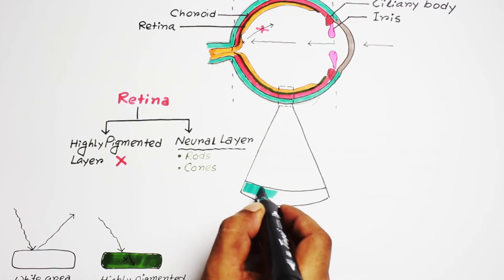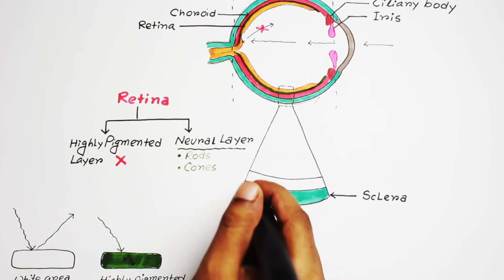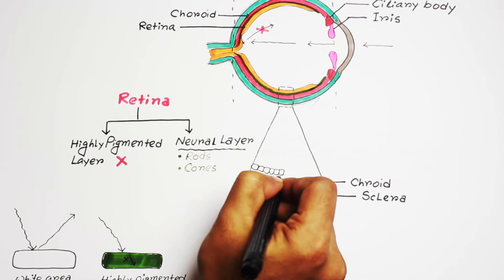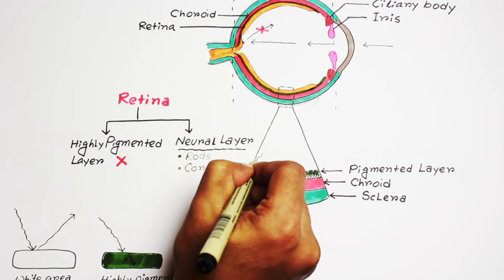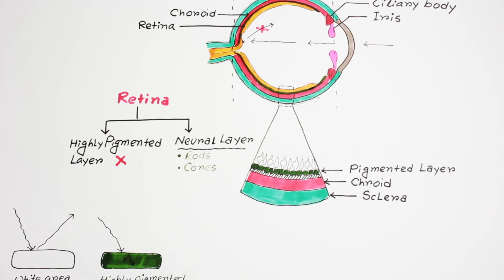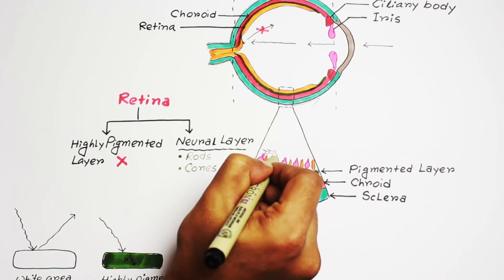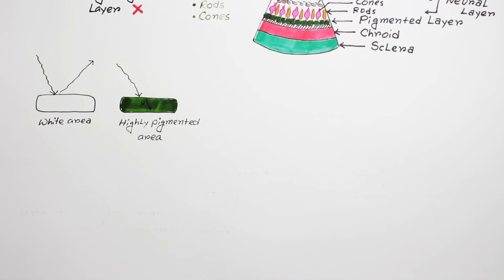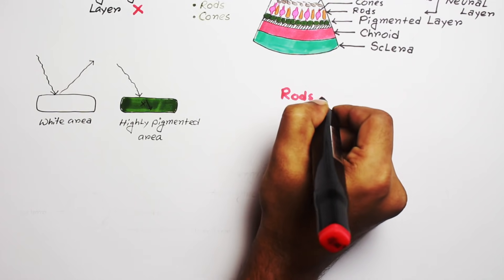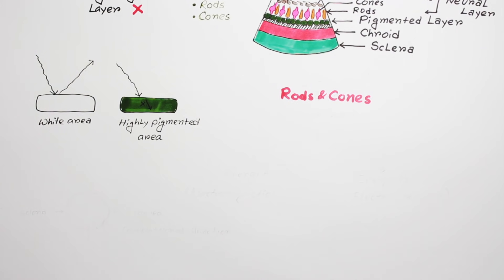Let's enlarge this area. Here, it is sclera, then choroid and this pigmented layer. And just above the pigmented layer, there is a neural layer which contains rods and cones and bipolar cells. So, what are rods and cones?